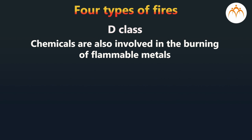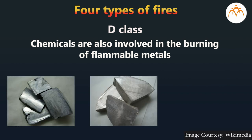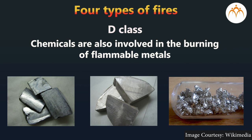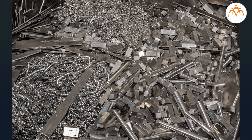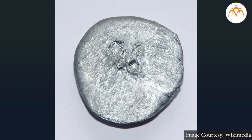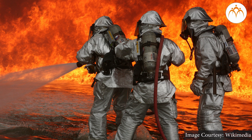Chemicals are also involved in the burning of flammable metals such as potassium, sodium, calcium, etc. This type of fire is Type D fire. Aluminum or zinc reacts with water at high temperatures, and so when exposed to water, causes a flare up.